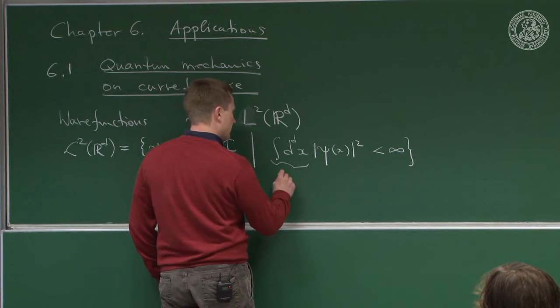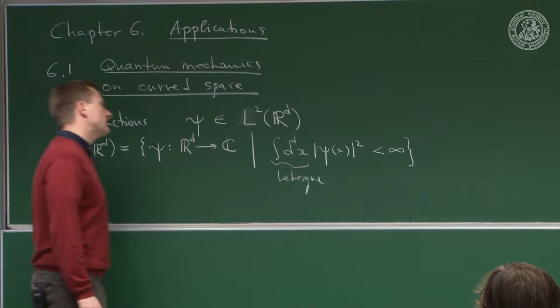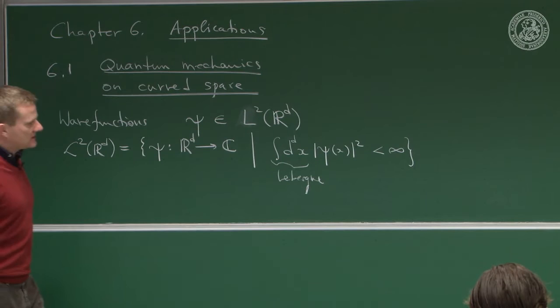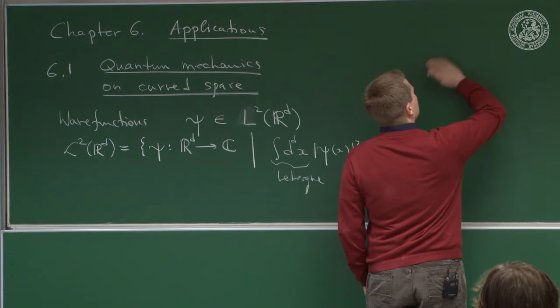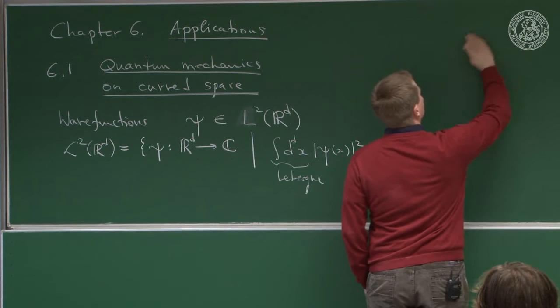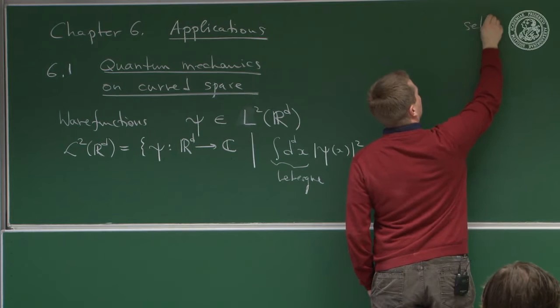You need a Lebesgue integral to make this really work rather than a Riemann integral, and there are lots of things to be said at this point. However, this is far from all the subtlety one needs. I only mention this because I want to disregard it — we're not going to look into these subtleties, but they should be mentioned once. Now, if we look at some position space representation or some representation in general, we wish to have operators — we need self-adjoint operators.